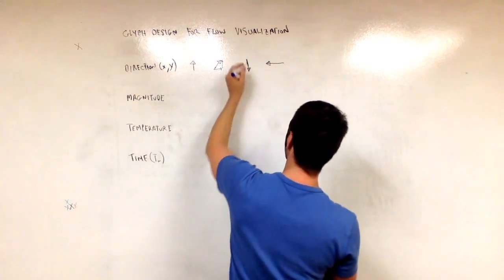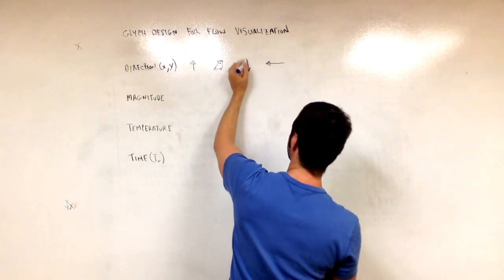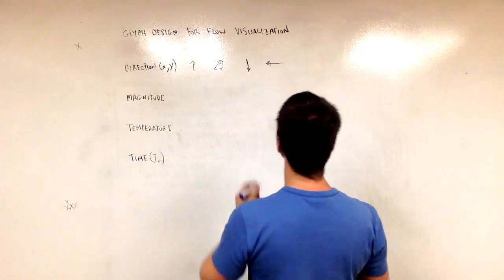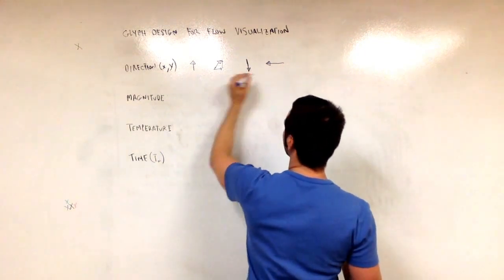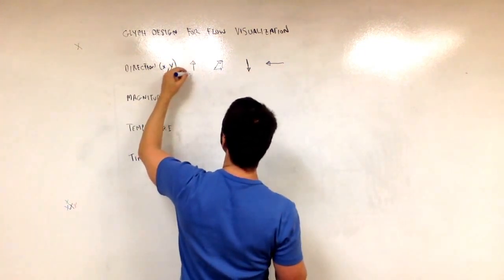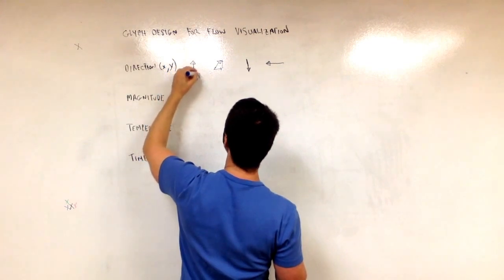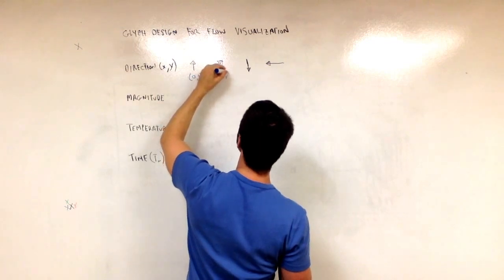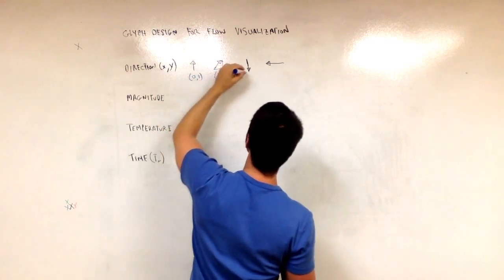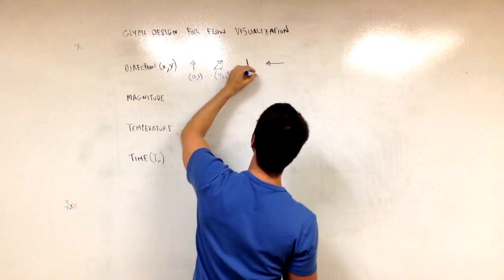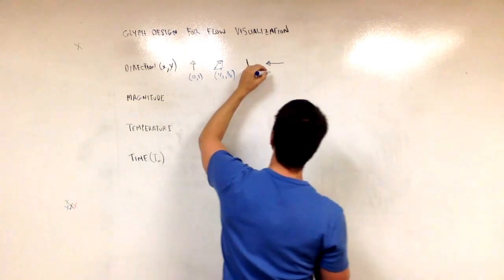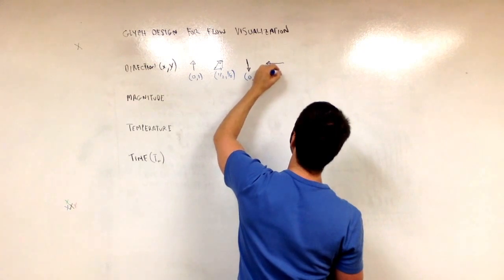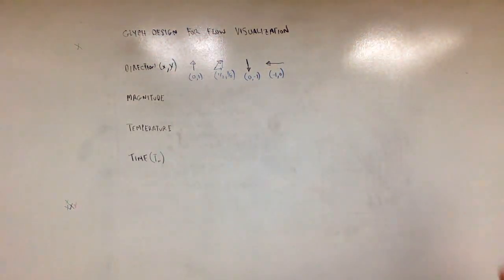This one is, again, there's no x. It's zero x pointing straight down, which is y minus one. So I can actually label them. I could do zero, one. And this is something like one half and one half. This one is zero minus one. And this one is just minus one. And no y.